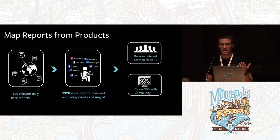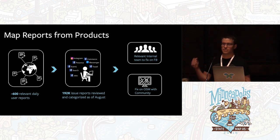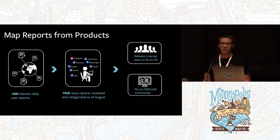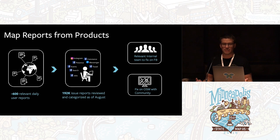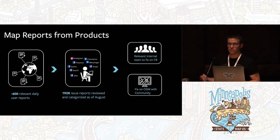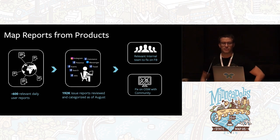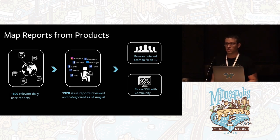One of the ways we act reactively is through map reports from our products. When there's an issue, users can submit a report saying this town name is wrong, this road looks incorrect. It comes to one of our teams here. Currently we get about 600 reports a day that are map-relevant, and our team goes through each and every one of them. There have been 192,000 so far since we switched over to OpenStreetMap.